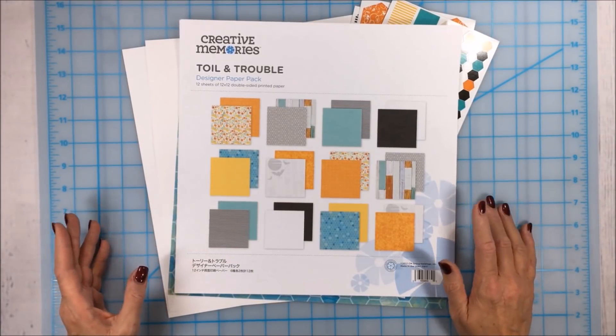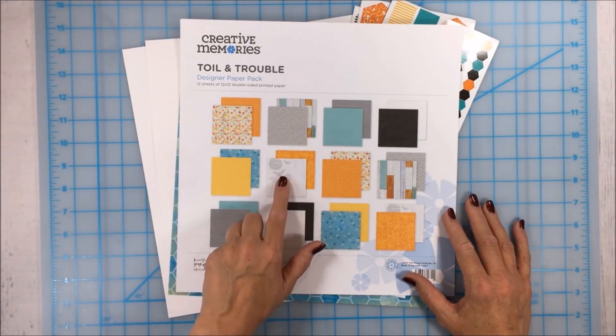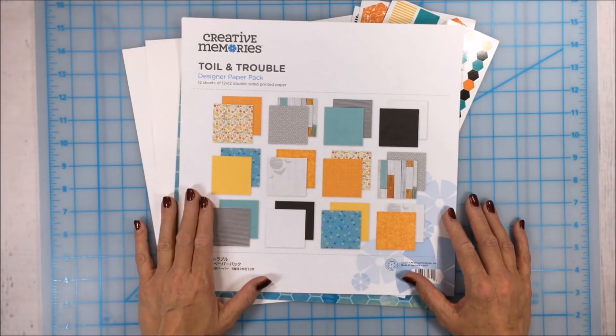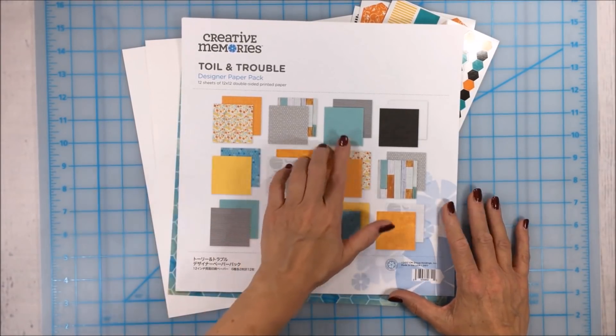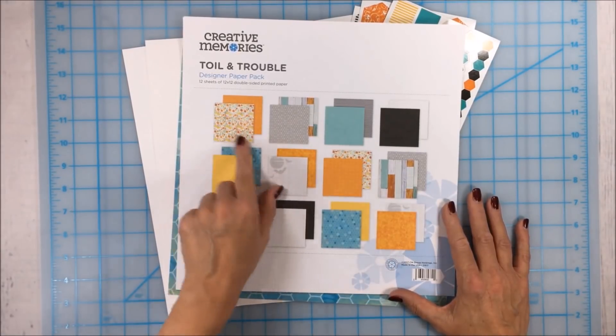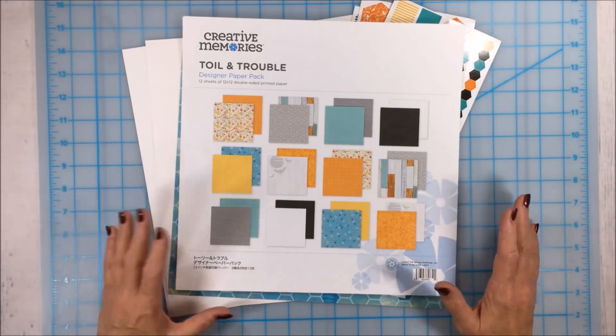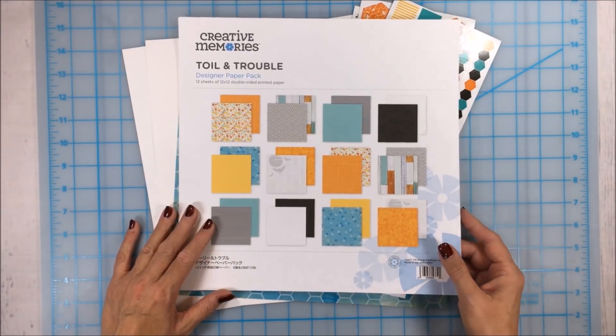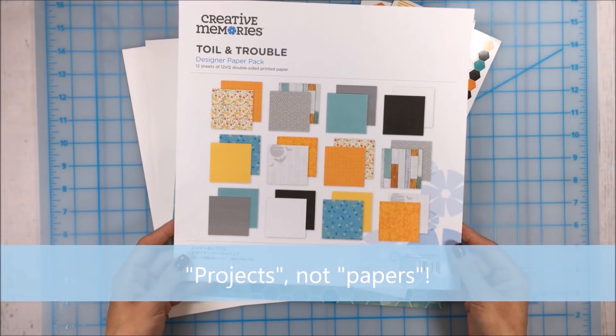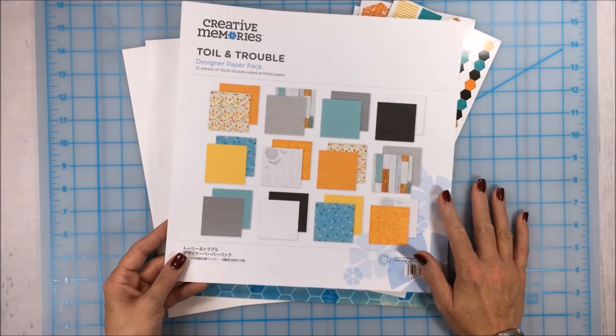This was a great collection to work with because of the unique color scheme. It wasn't your typical Halloween colors. There were a few papers that had Halloween imagery on them, but many were really nice geometric patterns, wood grain patterns, and florals. I'm actually going to use them with some photos from our Yellowstone trip, so that's a little bit of a different use.